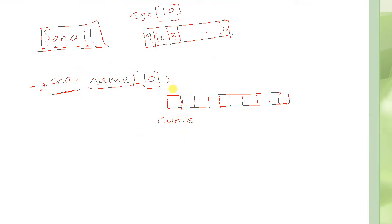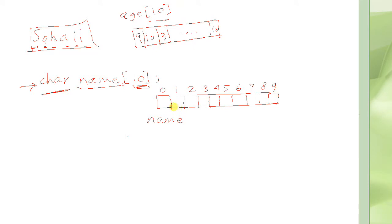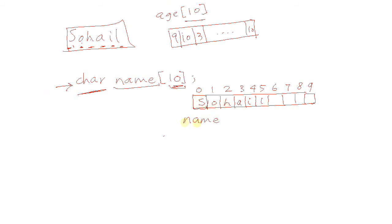As we learned before, the indices of these elements range from 0 to 1 less than the total number of elements — so 0 through 9. This is how the string "name" can be conceptualized in memory. In each one of those slots, since I can store one character, I could store S, O, H, A, I, and L. This is how I store my name in the string array "name".